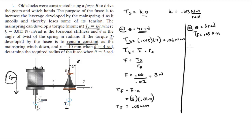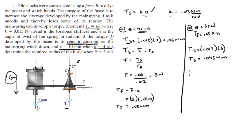At θ = 3 radians, Ts = 0.015 × 3 = 0.045 Newton-meters. Then F = Ts / ra = 0.045 / 0.012, because the radius of A never really changes, which comes out to 3.75 Newtons.